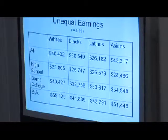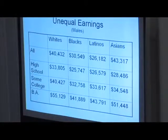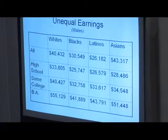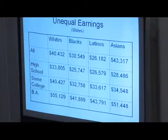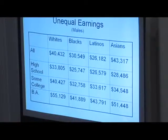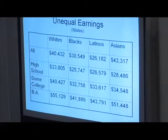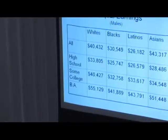The next statistic has to do with earnings, and it's set up by education level. For every educational level, there are major differences in what people earn — this is for males. For example, a male high school graduate who's white makes on average $33,805, while blacks make $25,748. Whites are making more than each of these other groups for the same level of education. If you're white and male, you'll make more money with a high school diploma than blacks who have some college education — even those with a community college degree.